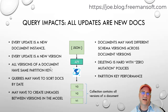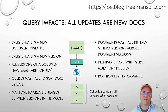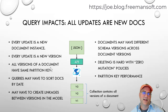What are the query impacts of all updates being new docs? Every update is a new document instance — a new version of a document. All versions of that document have the same partition key. That means if you do multiple updates to a document, when you query based on that partition key — like a social security number or driver's license number — you may end up casting a wide net in your query on the partition key, and then pull back the latest or the as-of out of that collection. If we have a problem with this, we could materialize a view where we only keep the latest. So you might have the primary store be the full history, and a secondary store that only keeps the latest. When you did an as-of, you would go against the primary store.